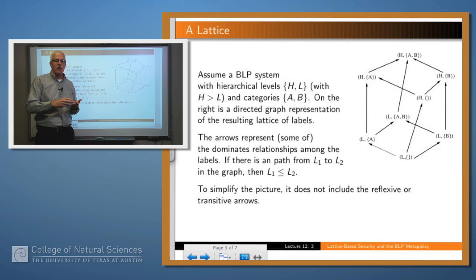And also remember that dominates is transitive, so that means if X dominates Y and Y dominates Z, then X dominates Z. And so if you've got a path within the graph from X to Y, then there should actually be an arrow directly from X to Y, but we just left that out. So this is a particular lattice for that particular set of labels.